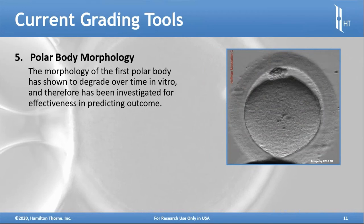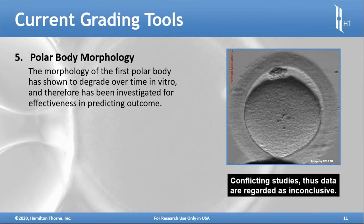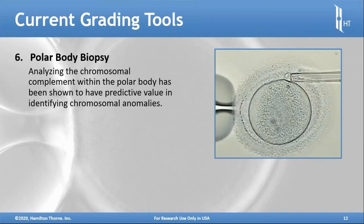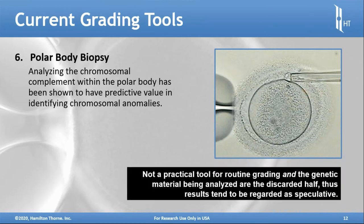Polar body morphology has been investigated: the morphology of the first polar body has been shown to degrade over time in vitro. Conflicting studies have shown different predictive values, so the data is inconclusive. Early polar body biopsy work allowed analysis of the chromosomal complement within the polar body and has shown predictive value, but it's not a practical tool for routine grading. You also leave off the chromosomal complement that stays inside the oocyte, and paternal contributing factors are not assessed.